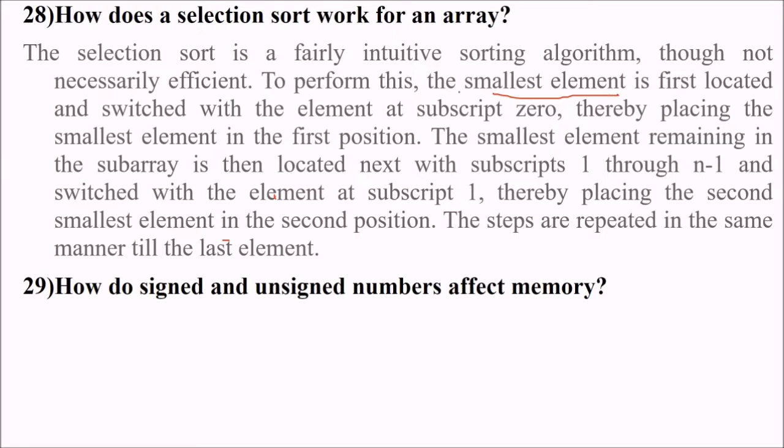To perform this, the smallest element is first located and switched with the element at subscript 0, thereby placing the smallest element in the first position. We take the smallest one from the list, search for the smallest element, and transfer it to the first position. Then the smallest element remaining in the subarray is then located next, which is subscript 1. You select the next smallest one and place it there. These steps are repeated in the same manner till we reach the last element. This is how we perform selection sort.